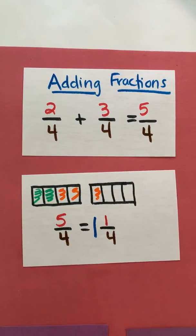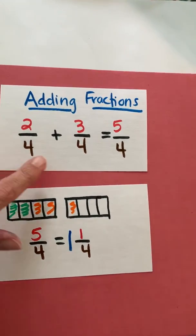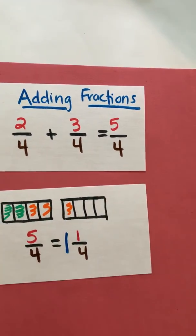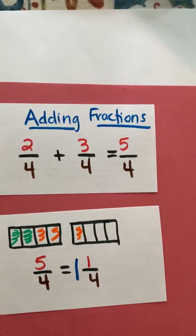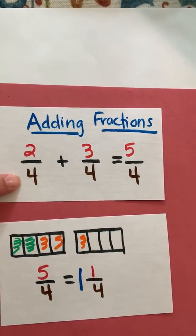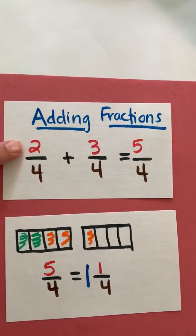You did this earlier in the year in fourth grade, so if we have two-fourths plus three-fourths equals a sum of five-fourths, we're going to use some models to review this. Remember you have your numerator and your denominators. Your denominators are the size of the parts and your numerator are the number of parts.